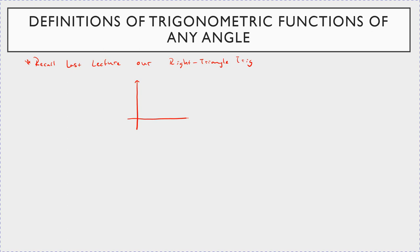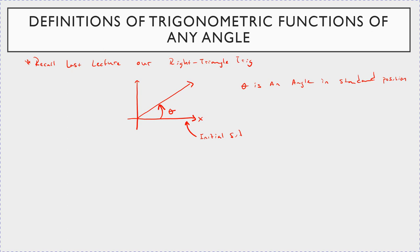If you take an angle in standard position — some angle like this — this is angle theta. Theta is an angle in standard form or standard position. That means the x-axis here is the initial side, and this ray here is the terminal side.